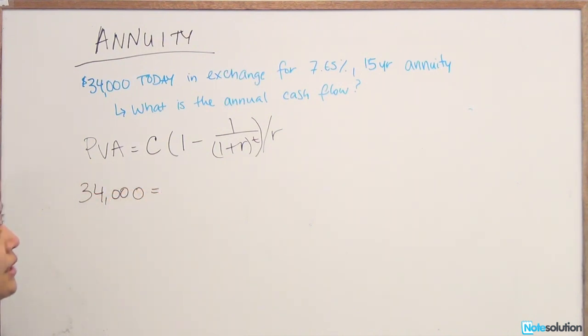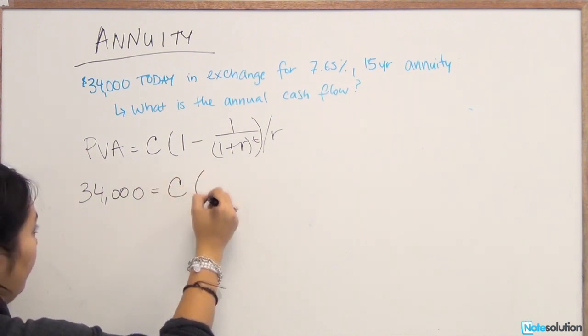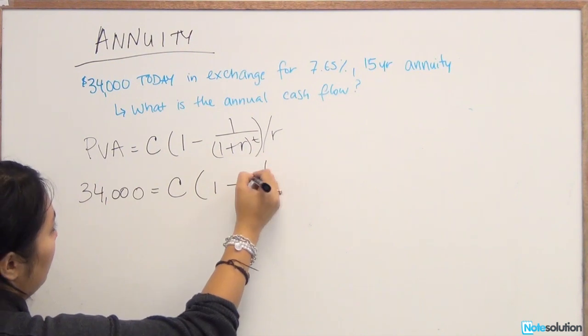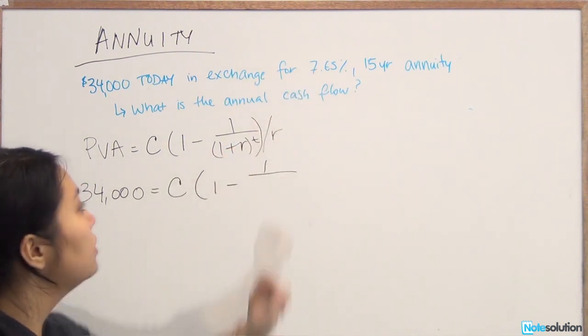You don't have your C, your cash flow, and that's what you're trying to calculate. Now, 1 plus R is going to be equal to 1.0765, which is just 1 plus the interest rate.